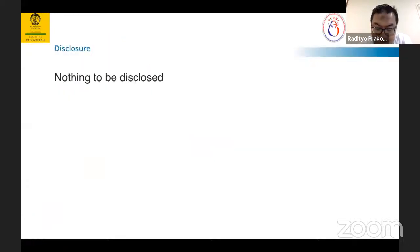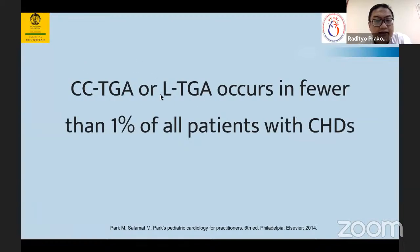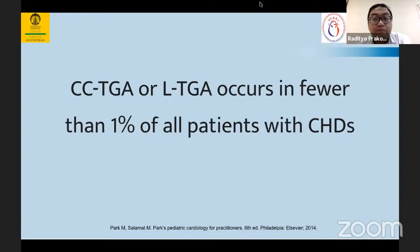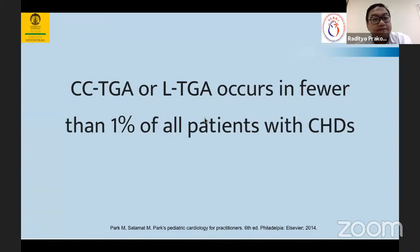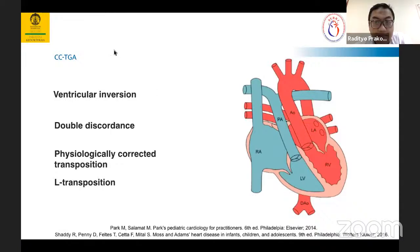Jadi kita hari ini belajar tentang CCTGA. CCTGA ini, atau levoTGA, hanya sedikit dibandingkan yang lain — misalnya TOF, PDA, VSD. Ini hanya 1% dari seluruh pasien dengan congenital heart disease. Saya diminta memberikan lecture karena ada permintaan dari teman-teman perawat untuk menyelesaikan tentang TGA — dari TGA-IVS, TGA-VSD, dan CCTGA. CCTGA adalah yang paling sedikit. Jadi apa yang terjadi pada CCTGA?